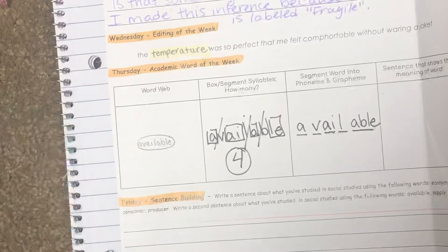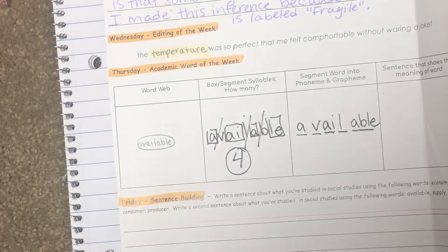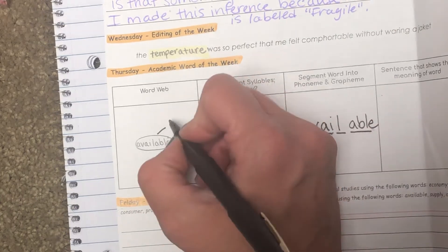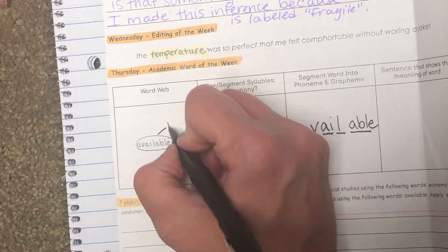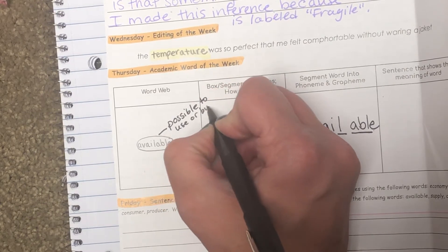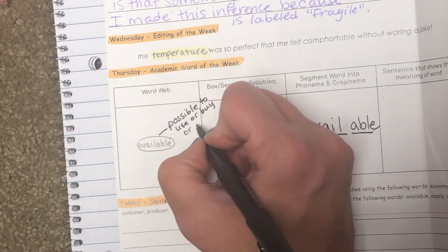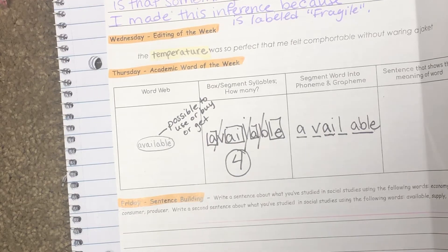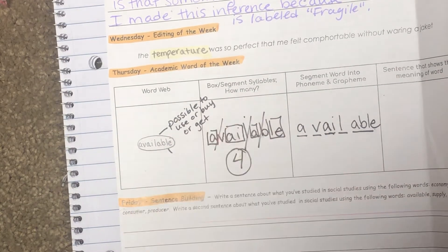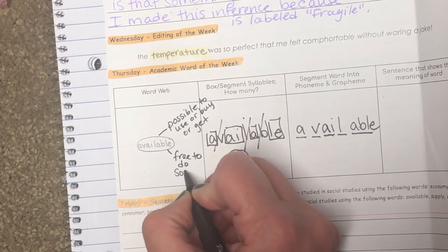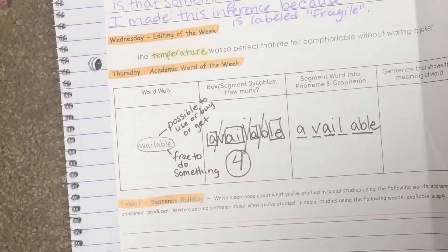Now we're going to go ahead and make a word web — ways that we've heard this word be used. You can add more than I have. If something is available, it means we can have access to it — it's possible to use, buy, or get. Maybe a video game is available, or a video game system is available. If you're talking about a person, you could be free to do something — you might have heard your parents talk with a friend and say, 'Are you available this weekend?'